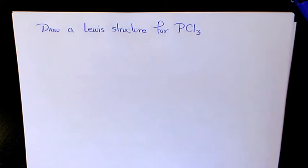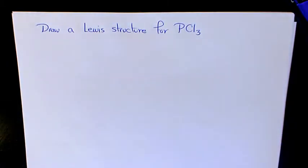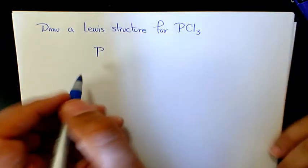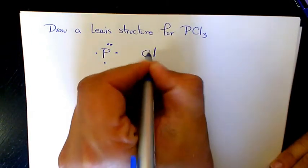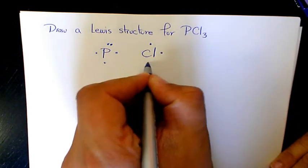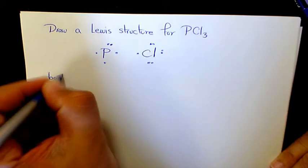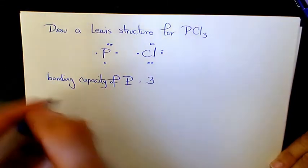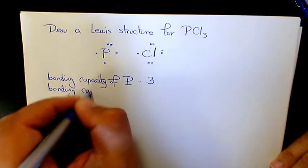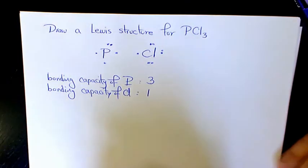The central atom is usually the element with the highest bonding capacity, or the one that we have just one atom of. It looks like P is going to be the central element. P has five valence electrons — one, two, three, four, five — and chlorine has seven valence electrons — one, two, three, four, five, six, seven. The bonding capacity of phosphorus is three, and the bonding capacity of chlorine is only one. So phosphorus's bonding capacity is higher than Cl, so P is the central atom.